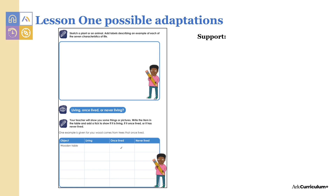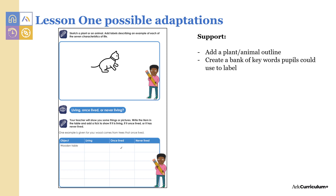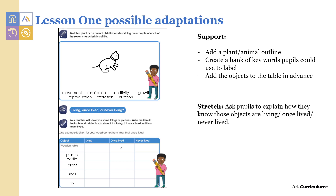In lesson one, pupils should draw out an animal or a plant and list the seven characteristics of life. Underneath, they have a table of different objects and should write whether they have lived, are dead, or have never lived. Support pupils by adding a plant or animal outline, by creating a bank of keywords for pupils to use to label, and by adding the objects to the table in advance. Stretch pupils by asking them to explain how they know those objects are living, have once lived, or have never lived.